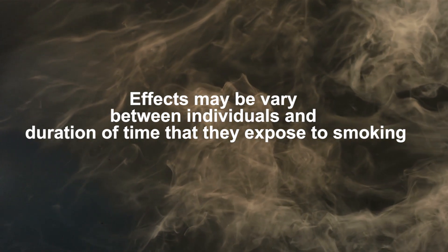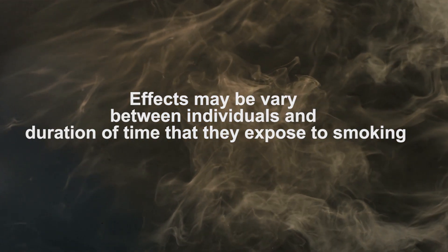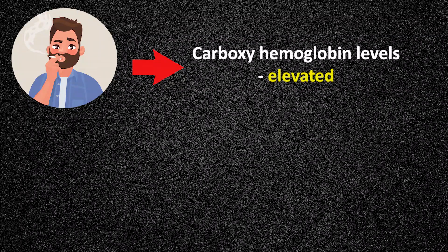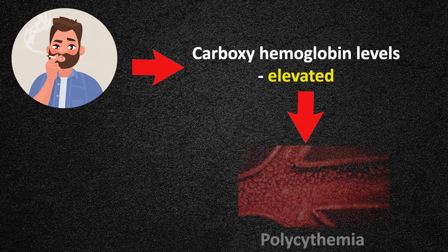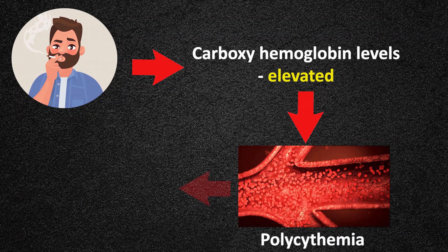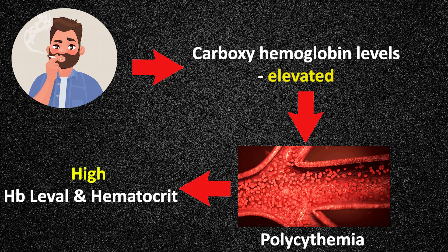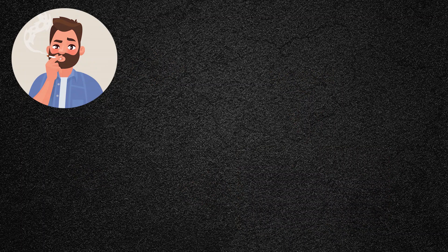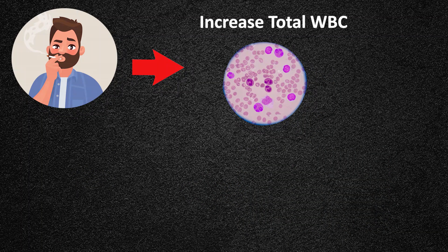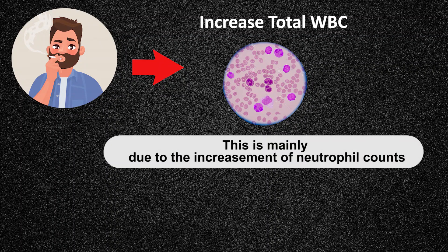The duration of time exposed to smoking also influences results. Due to cigarette smoke, the carboxyhemoglobin level gets elevated in blood and is associated with polycythemia. Therefore, these people have high hemoglobin levels and high hematocrit. Smoking also increases the total white blood cell count in individuals, mainly due to an increase in neutrophil counts.